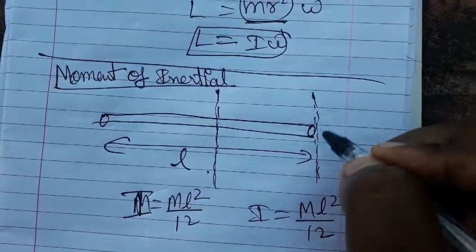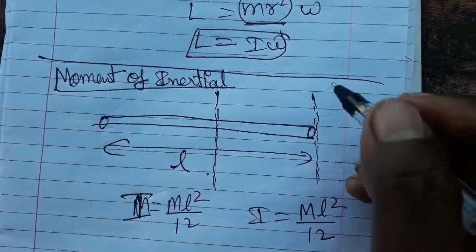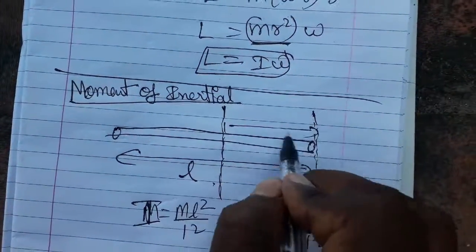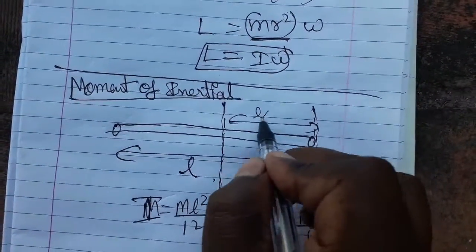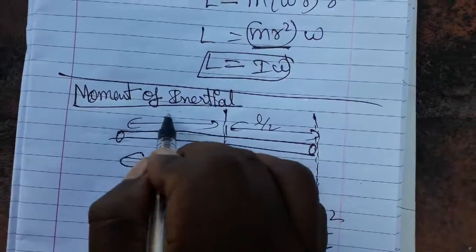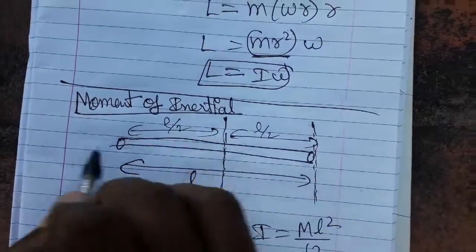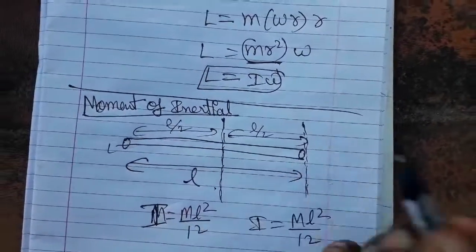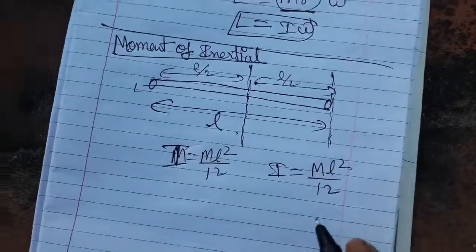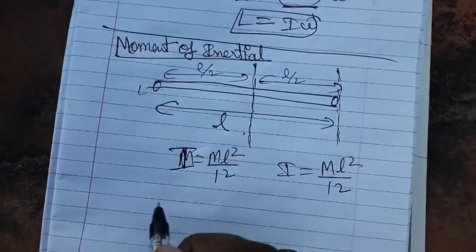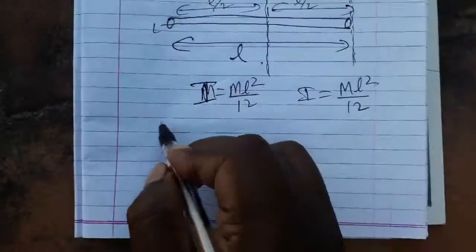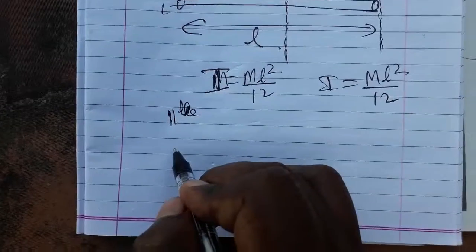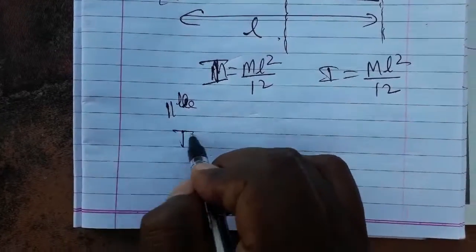Now the question is: what is the moment of inertia when the axis passes through the edge of the rod? That means from the center, each side is l/2 — whether it's the left corner or right corner. We need to find the inertia at the edge of the rod using the parallel axis theorem.